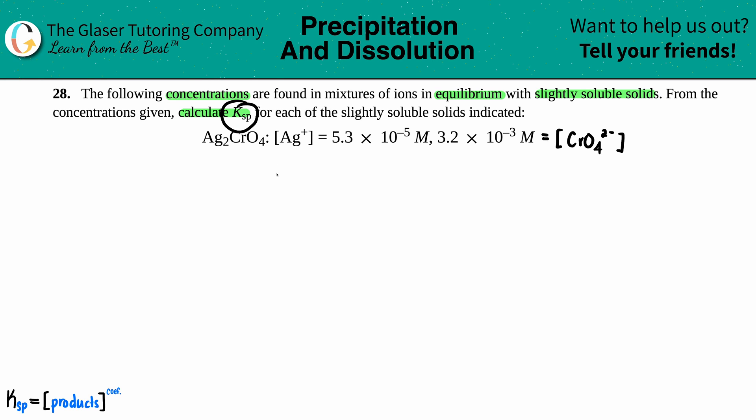Now from there we just have to find out the Ksp. Remember, a Ksp always comes from a balanced equation. We have to take this solid—it was slightly soluble but it's a solid nonetheless—and dissolve it into its two ions. And they told us what the ions are, so there's no guessing here. So we have Ag₂CrO₄, that is the solid, and it's coming to equilibrium.